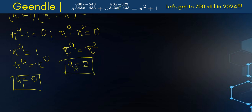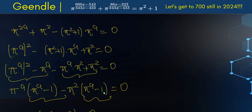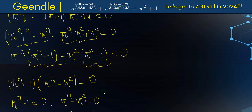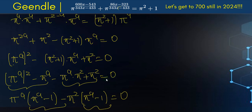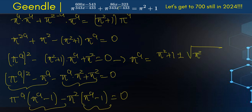We said we would solve this two ways, so I'll keep my word and solve using the quadratic formula as well. Applying the quadratic formula to π to the A squared minus (π squared + 1)·π to the A + π squared equals 0, we get π to the A equals negative b, which is π squared + 1, plus or minus the square root of b squared minus 4ac, where b squared is (π squared + 1)² and 4ac equals 4π squared, all divided by 2.